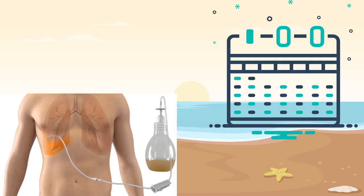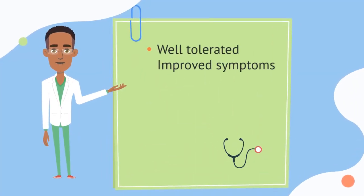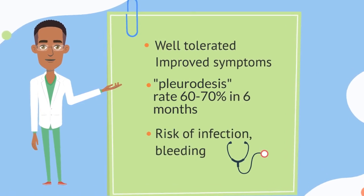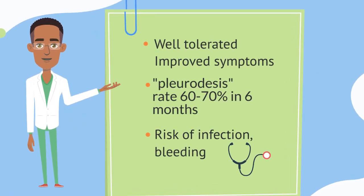After the catheter is placed, the patient is advised to drain the catheter every day to optimize the resolution of the fluid, because there is a higher likelihood of resolution of pleural fluid with daily drainage. This is a very well tolerated procedure with improvement of symptoms in many patients, and pleurodesis — the resolution of pleural effusion — occurs in up to 60 to 70 percent of patients within six months. Common risks are infection, which occurs in 10 percent of patients and is usually treatable, and there is also a risk of bleeding as with other procedures.